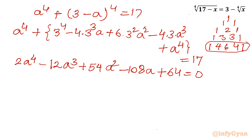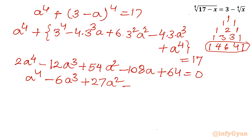Since 81 minus 17 gives 64, the equation is divisible by 2. Dividing through by 2 gives a⁴ minus 6a³ plus 27a² minus 54a plus 32 equal to 0.